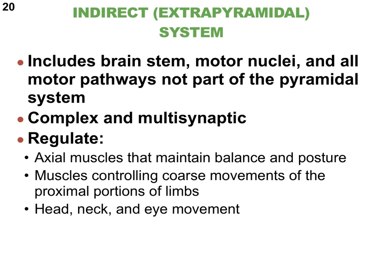The other major descending pathway group is the extrapyramidal or indirect pathways. They're rather complex and a little beyond the scope of this class. They typically involve several neurons and control balance, posture, head/neck/eye movements, and coarse movements of the limbs. They are not part of the pyramidal tracts.